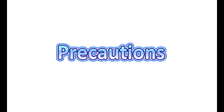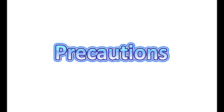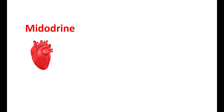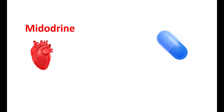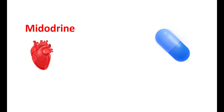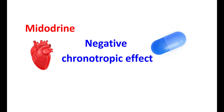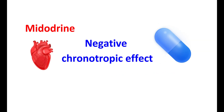Midodrine can slow your heart rate because of its action on the vagal reflex. Therefore, when taking other medications that also produce slowing of the heart rate, the effect may be enhanced. This can be pronounced when taking drugs that produce a negative chronotropic effect — medications that reduce heart rate and induce symptoms of bradycardia.